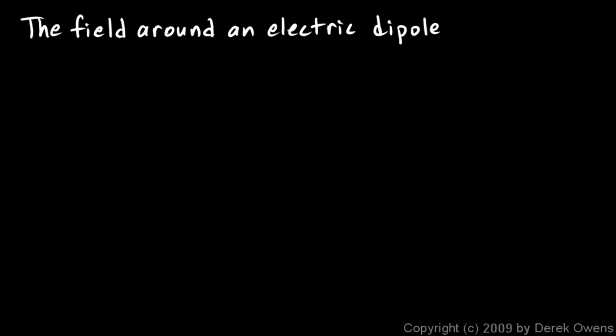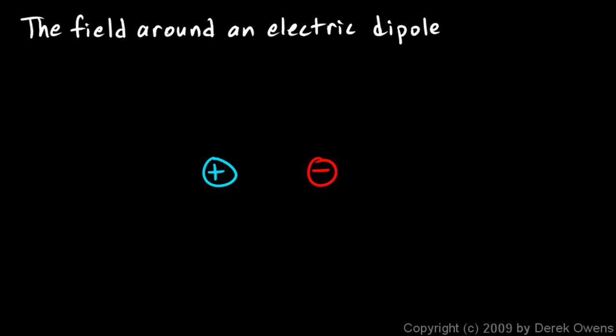With these concepts in mind, we can think about the shape of a field around an electric dipole. What is an electric dipole? The word polar just means having opposites, like the North Pole and the South Pole of the Earth. You might hear the word polarized — in politics, for example, two people might believe opposite things and be polarized on an issue. So, the word dipole means two — di means two — two opposites. An electric dipole is just a positive charge and a negative charge together.